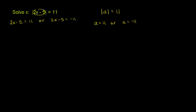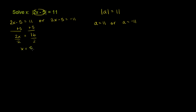Because in either case, if you took its absolute value, you would get 11. Now let's just solve each of these equations. Over here, we can add 5 to both sides of this equation. We get 11 plus 5 is 16. 2x minus 5 plus 5 is just 2x. 2x is equal to 16. Divide both sides by 2. We get x is equal to 8.